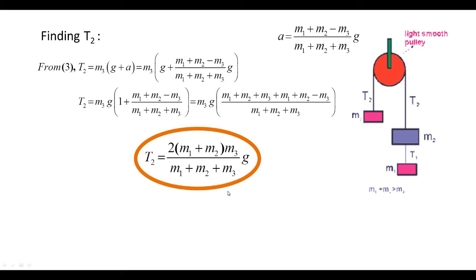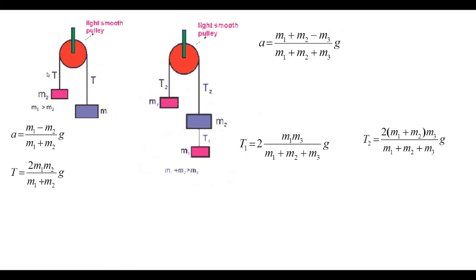We now compare these results with the two-block pulley system from an earlier video. For a two-block system with masses m1 and m2 (m1 greater than m2): acceleration equals (m1 minus m2)/(m1 plus m2)·g, and tension equals 2·m1·m2/(m1 plus m2)·g. For the three-block system: acceleration is (m1 plus m2 minus m3)/(m1 plus m2 plus m3)·g, T1 is 2·m1·m3/(m1 plus m2 plus m3)·g, and T2 is 2·(m1 plus m2)·m3·g/(m1 plus m2 plus m3).